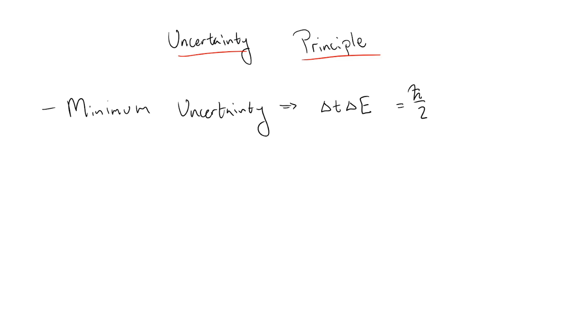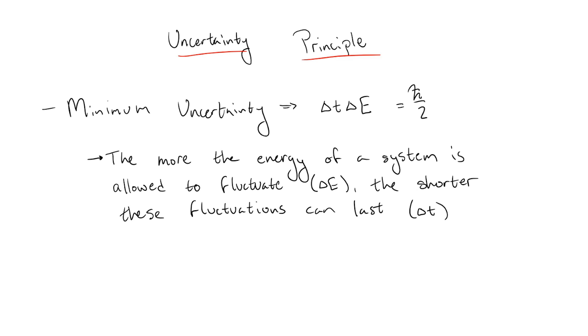This relation has a few interpretations, but the one that will be most helpful in our case is that we can never know the exact energy of a system, but the more we allow the energy of the state to fluctuate, the shorter these fluctuations last. In other words, a system can borrow energy as long as it quickly gives the energy back. The more energy the state borrows, the faster it must give it back.